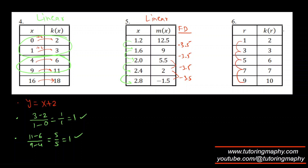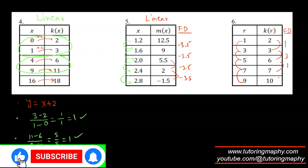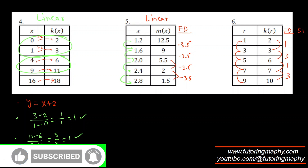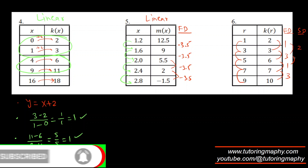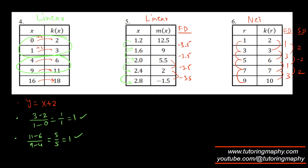For the next table, x increases from 1 to 3 to 5 to 7 to 9 — same increase. First differences are 1, 3, 1, 3 — alternating. Second differences are −2, 2, −2 — not equal. So this is neither linear nor quadratic.